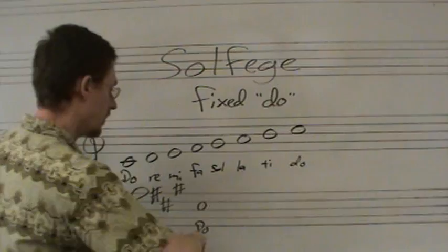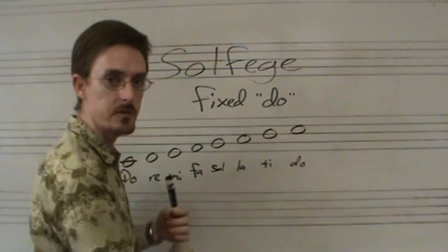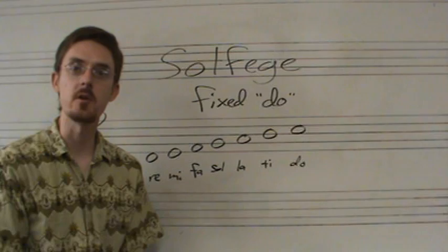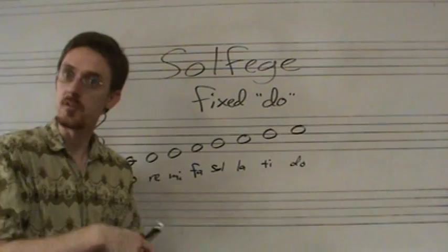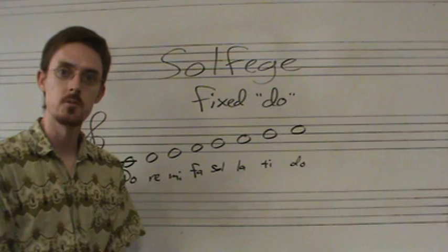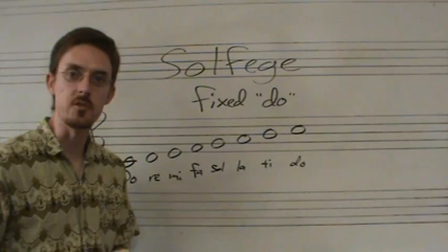We are not using that system, however. There are advantages to it — one advantage to the fixed doe system is that the name of the note is always the same no matter how or in what context it is encountered. The reason I don't use fixed doe is because we already have a fixed system of naming notes regardless of key, and that is the note names themselves — C. So in the key of A, C will be C regardless of what key it's in. We already have that system, so fixed doe is a little redundant, in my opinion.